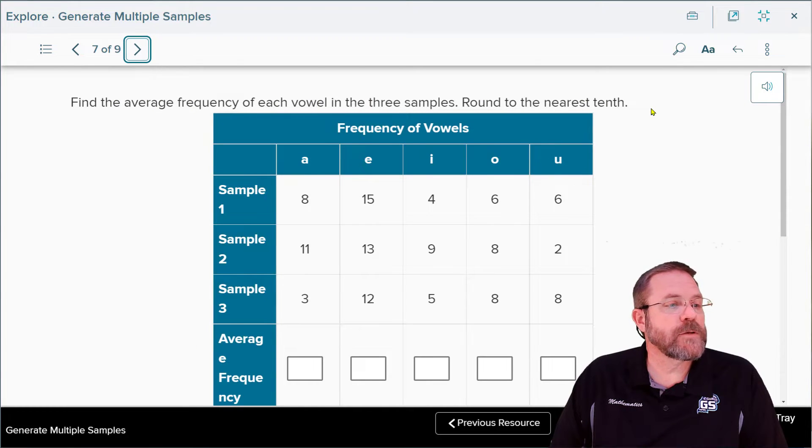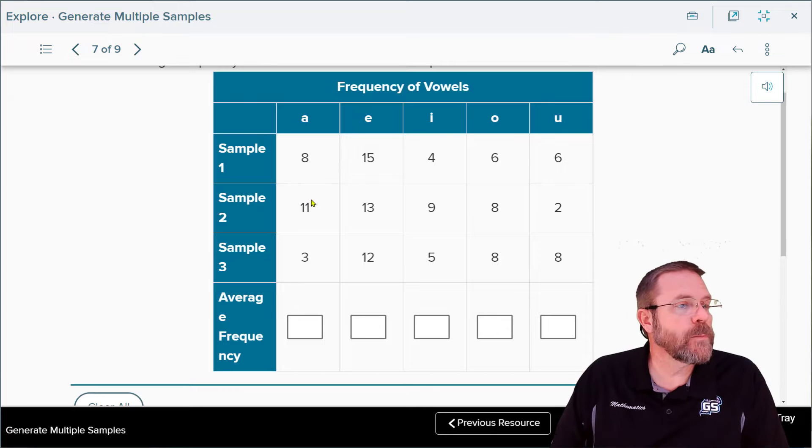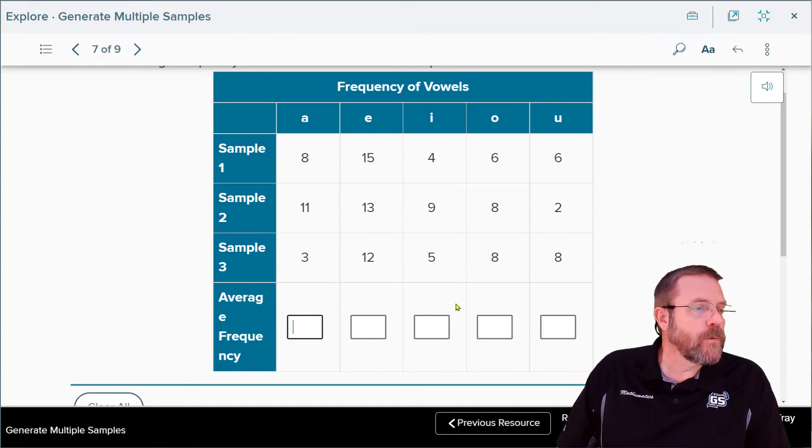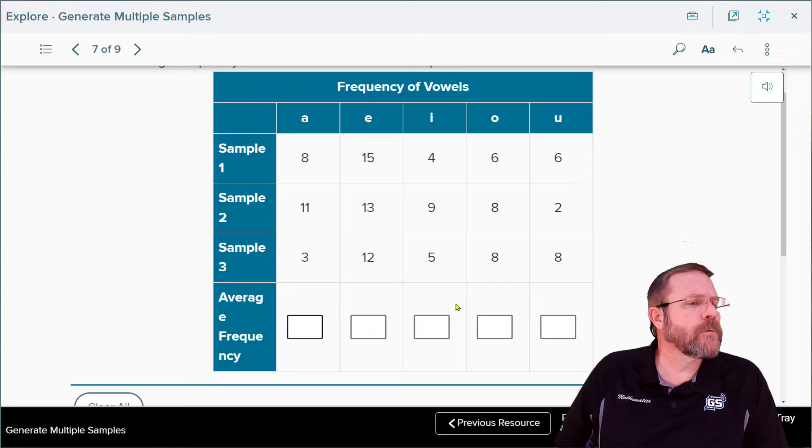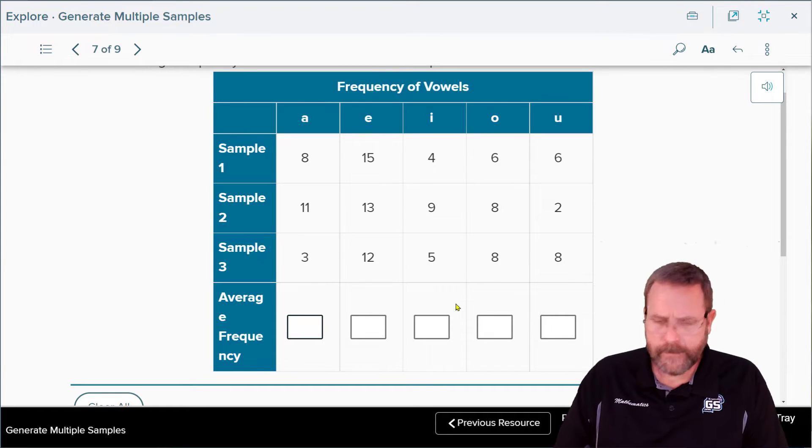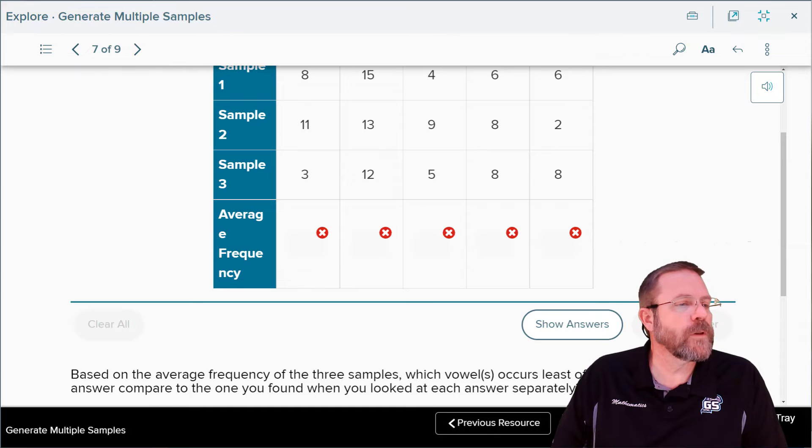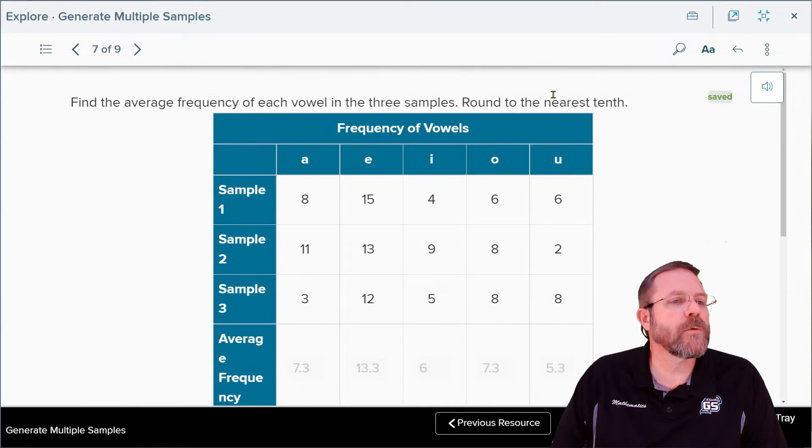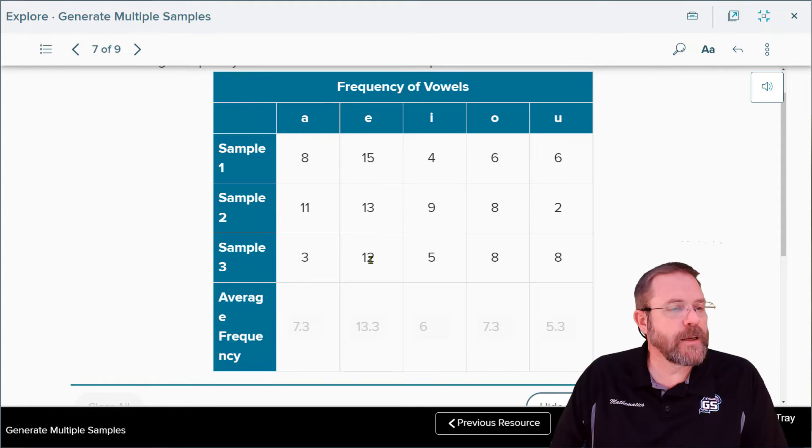Now find the average frequency of each vowel. That means you add them up and divide by the number of numbers. So I have 8 plus 11 is 19, 19 plus 3 is 22, and 22 divided by 3 is 7.3. Let me show you what those answers are. They added each one of these up, divided by the number of numbers in their data set, and found out that this is the average occurrence of each one of those letters in the word samples they collected.